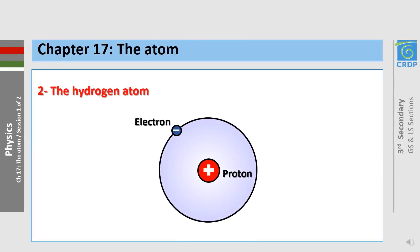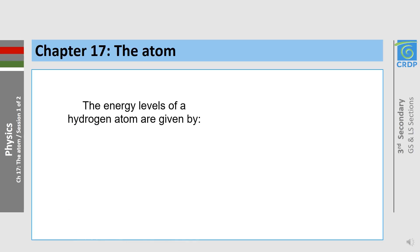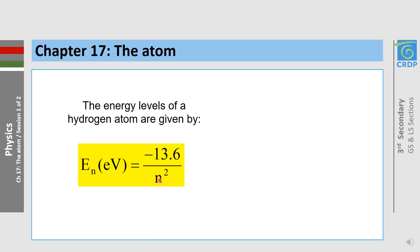Let's now approach the second part of this session, which concerns the hydrogen atom. This atom is the simplest one — it has one single proton and one single electron. For this reason, it has been extensively studied, both theoretically and experimentally. The energy levels of a hydrogen atom are given by the following formula: EN in electron volt equals minus 13.6 over N squared, where N is a non-zero whole number.